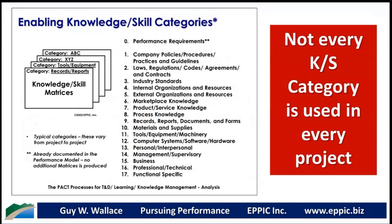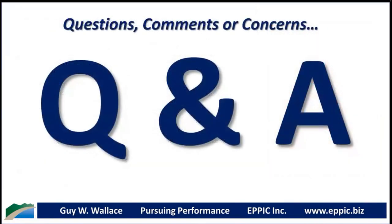I have 17 categories of enabling knowledge and skills that I use to systematically derive what you have to know to be able to do. When I started in the early 80s this was a list of eight categories — it grew to 12 and now it's been at 17 since probably 1987 or 1988. This is how I systematically tease out company policies and procedures, laws, regulations, codes, industry standards, internal organizations, etc. — not every category is used in every project.